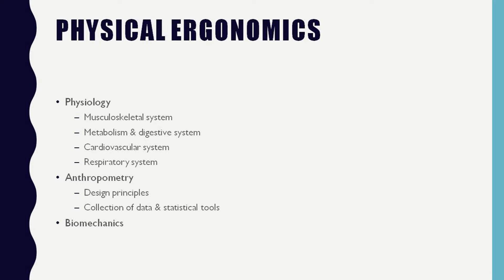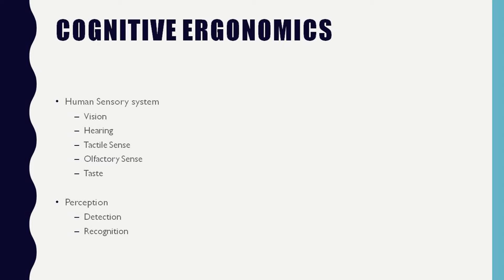We will also discuss basics of biomechanics. In the cognitive ergonomics part, we will discuss the human sensory system — vision, hearing, tactile sense, olfactory sense, and taste. These are the basic five human senses through which we perceive information and decide our course of action. We will also discuss perception, including detection and recognition.